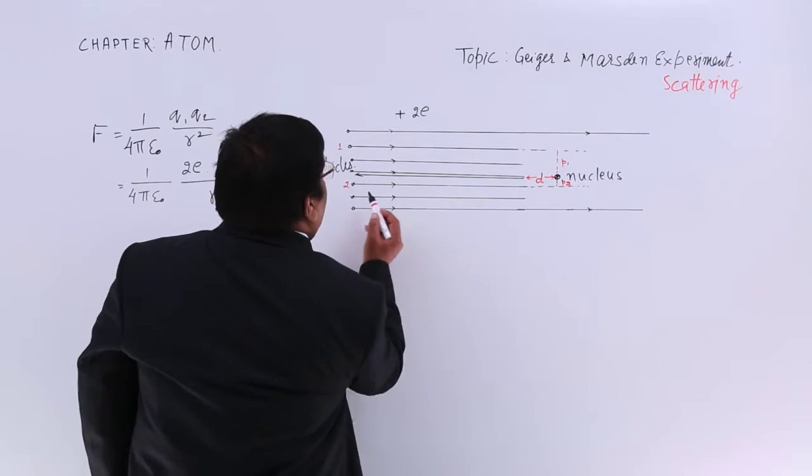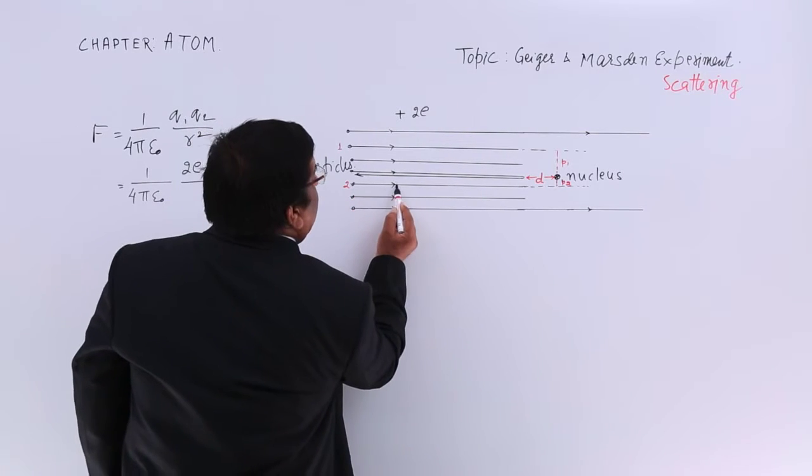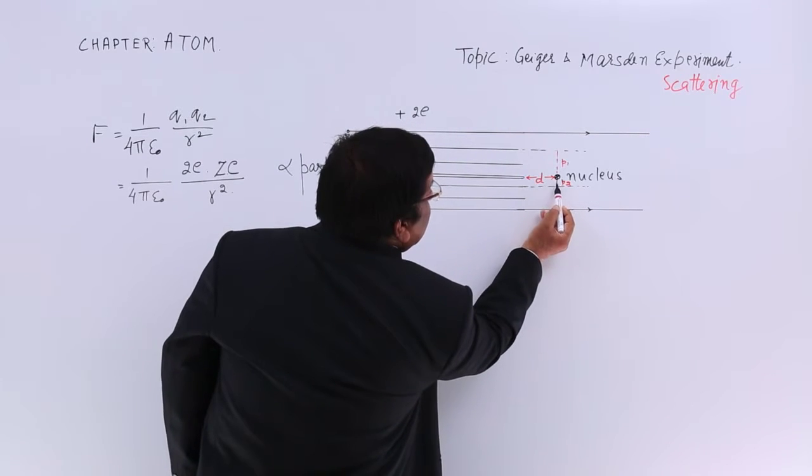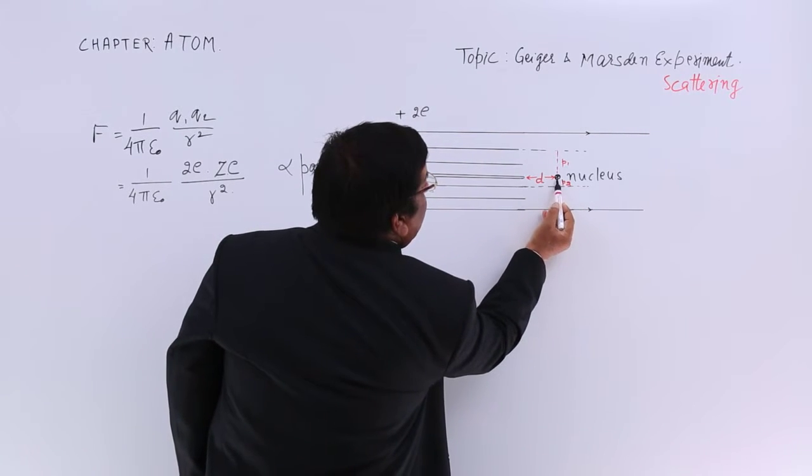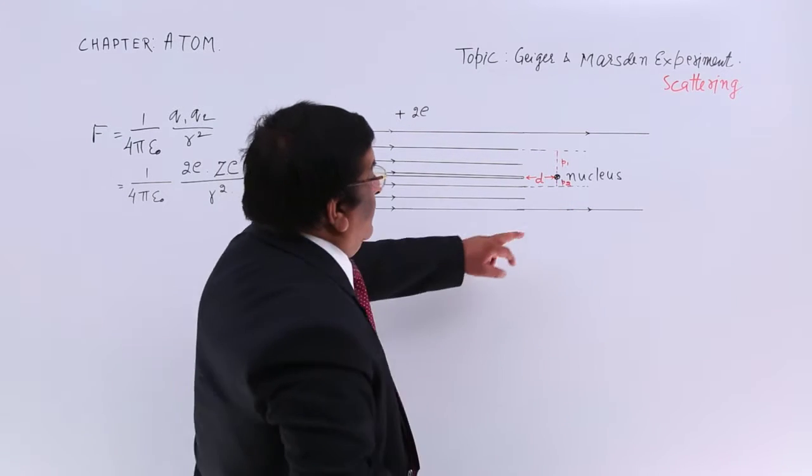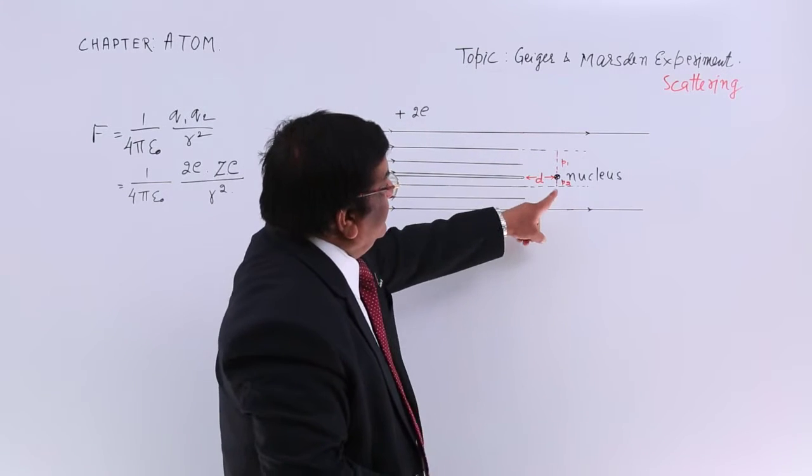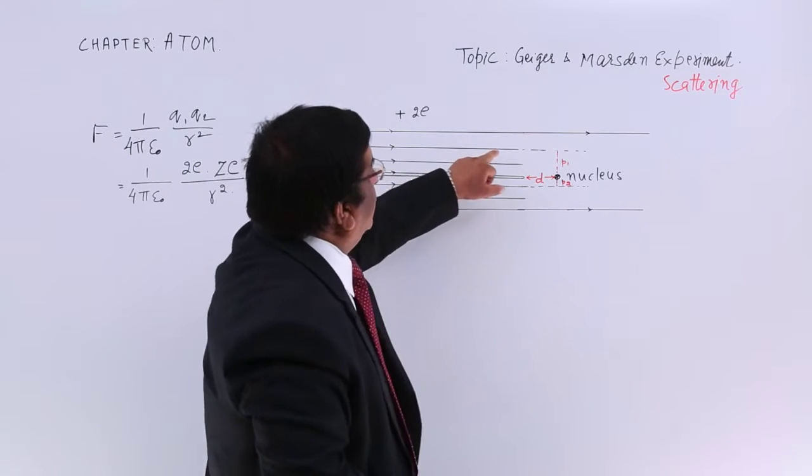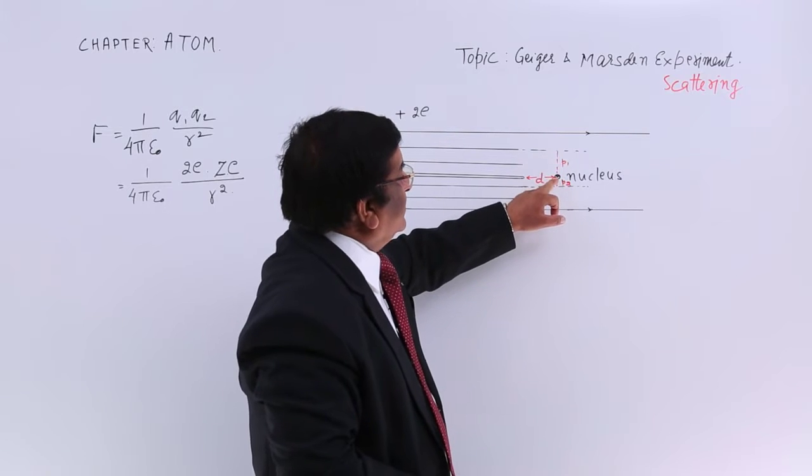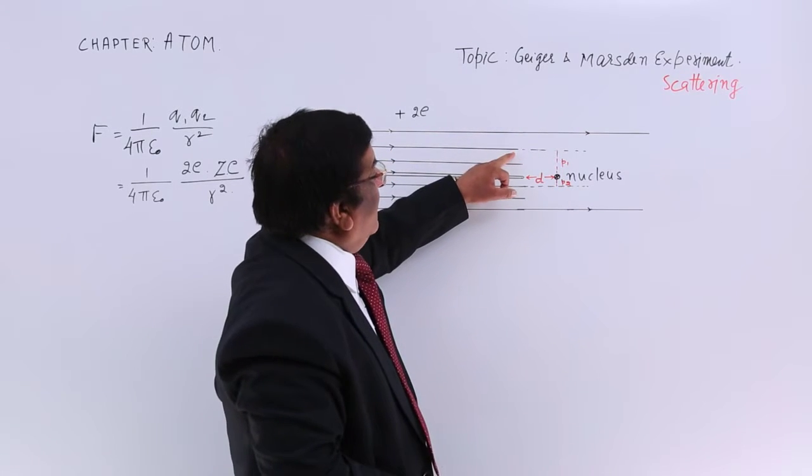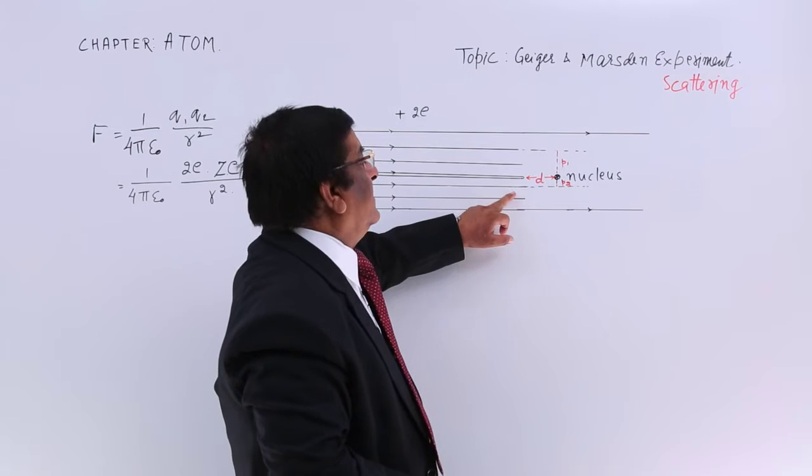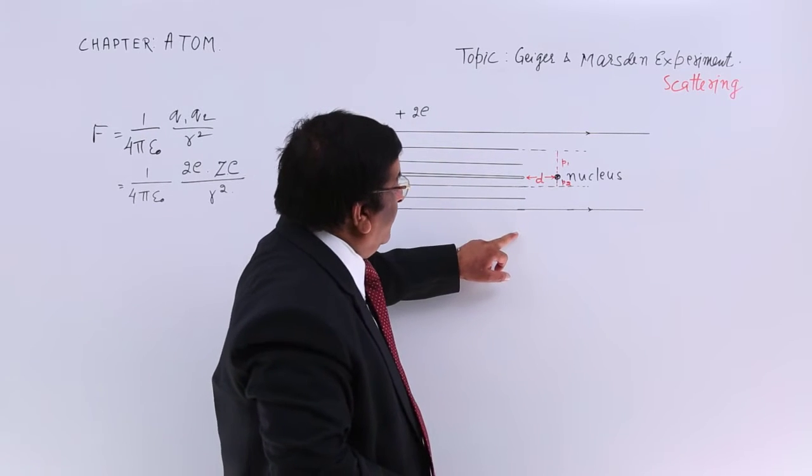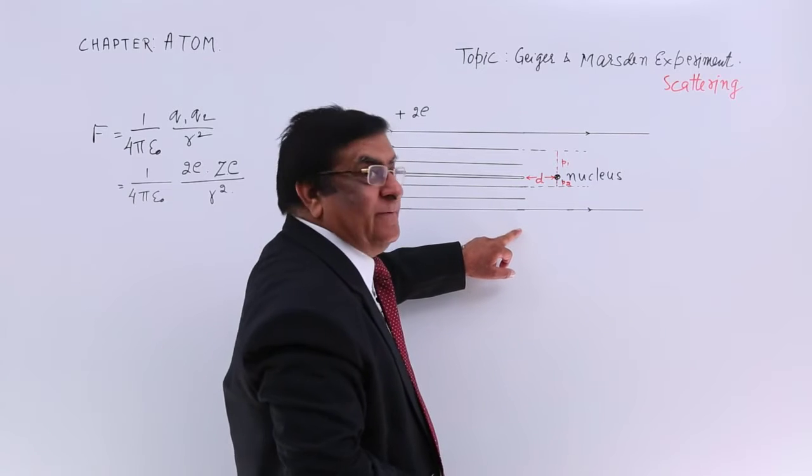In that case, if this alpha particle is going in this path, this is the distance. Then for this particle, this is the distance. That means this is away and this is closer. This is away, this is much more away, there will be one more, much more away.